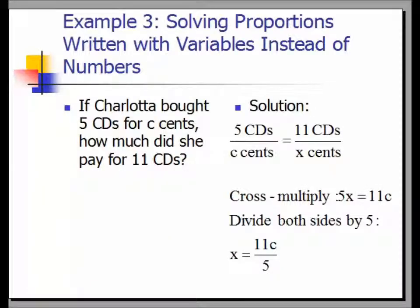Example 3: Solving proportions written with variables instead of numbers. If Charlotte bought five CDs for C cents, how much did she pay for 11 CDs? Call the unknown amount x. Set up a proportion: 5 CDs over C cents equals 11 CDs over x cents. Cross multiply to get 5x equals 11C. Divide both sides by 5, giving x equals 11C over 5.